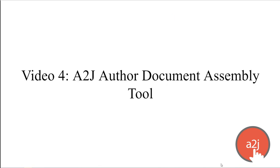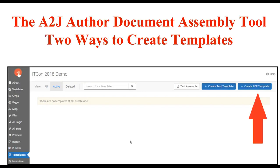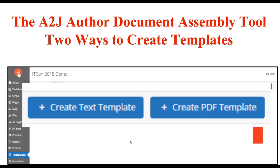Today we will cover the A to J Author document assembly tool. There are two ways in A to J Author to create templates: you can either create a PDF template or a text template. Both have the same outcome — both a text template and a PDF template produce a PDF document when finally assembled. The difference is in how you create the original template and how you automate on top of it.